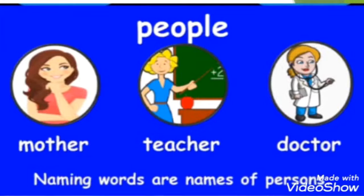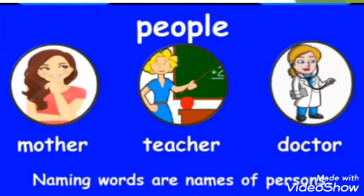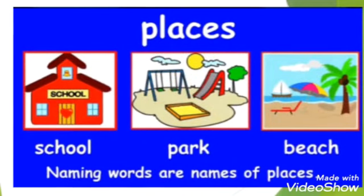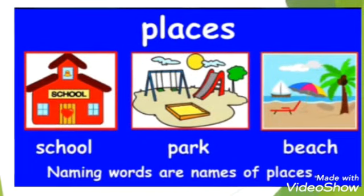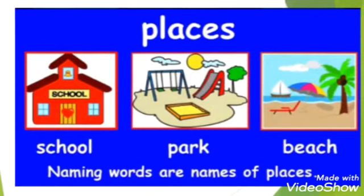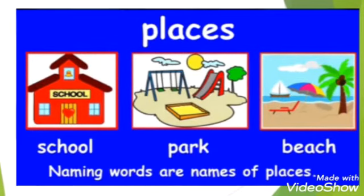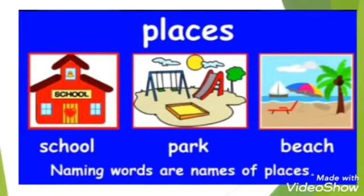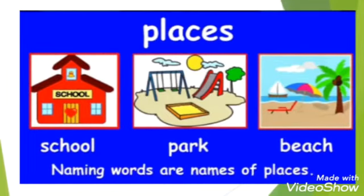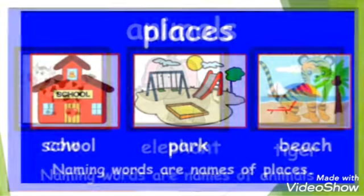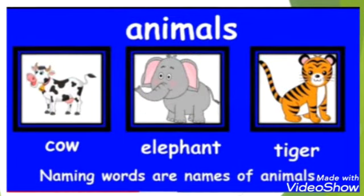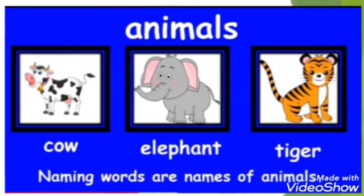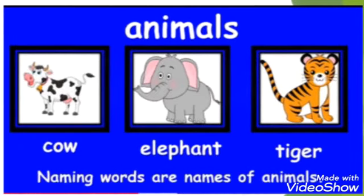Naming words are names of persons and names of places. As you live in Faridabad, Faridabad is also a place. In the same way, we see many animals around us like cow, elephant, tiger, and all animals have their name.